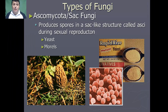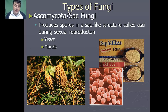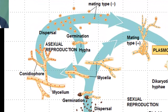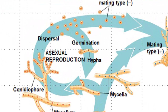The next fungi we'll explore is the ascomycota, or sac fungi. Ascomycota produce spores in sac-like structures called asci during sexual reproduction. Some examples of ascomycota are our yeast and morels. Let's take a look at the reproduction of a typical ascomycota fungus using an example that's pretty famous — Neurospora crassa. The ascomycota mycelia can reproduce asexually by producing pigmented haploid spores called conidia. The conidia can then germinate to form hyphae, which then can form new mycelia.